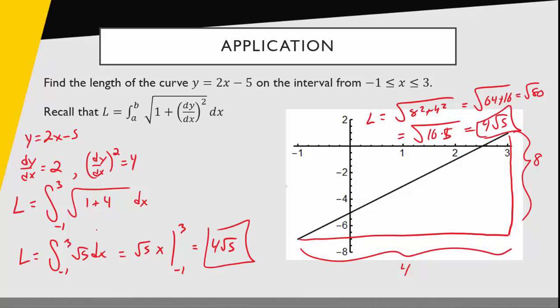And once again, we can only do that secondary approach to verify our solution in this case, because we had a straight line. Let's look at a more complicated example.